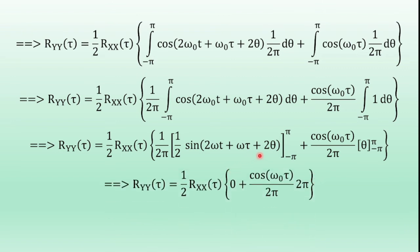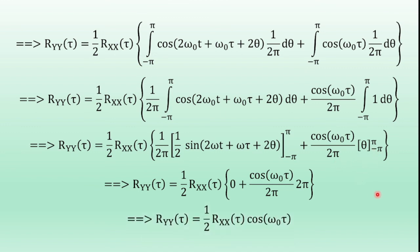Applying the upper and lower limits of θ: the first term evaluates to zero. For the second term, ∫₋π^π cos(ωₒτ) dθ = cos(ωₒτ)·[π − (−π)] = cos(ωₒτ)·2π. The 2π cancels with the 1/(2π) factor. Therefore, the final result is R_YY(τ) = (1/2)·R_XX(τ)·cos(ωₒτ).